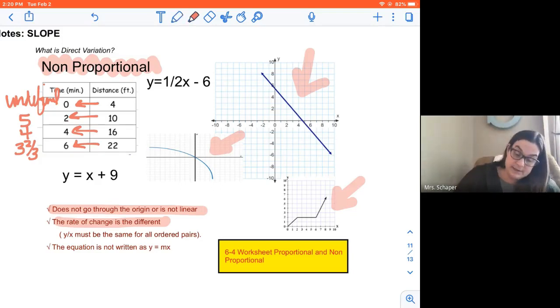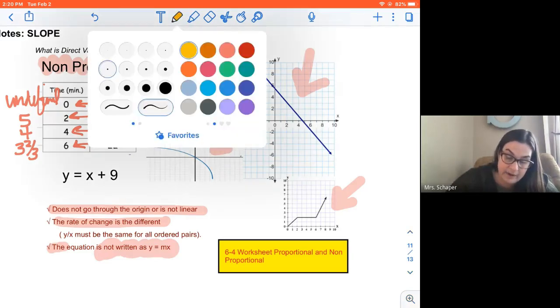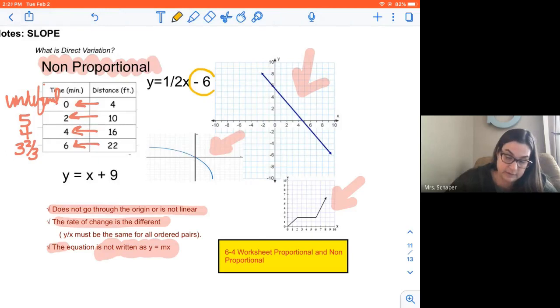And notice here, the last one, the equation is not written as y equals mx. Notice how each of these have a number added to it or subtracted from it. It's not just y equals a number. It's plus 9 minus 6. Those are all examples of non-proportional. They are not proportional. They don't go through the origin.